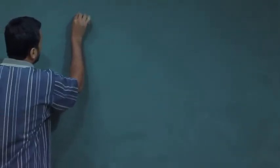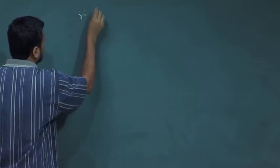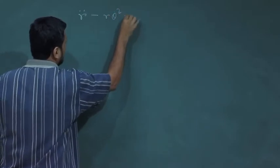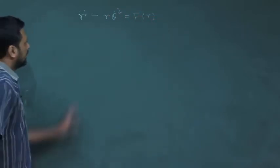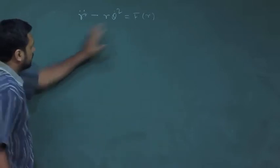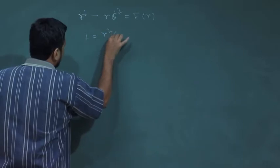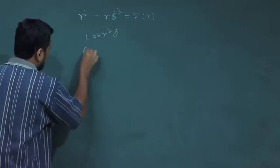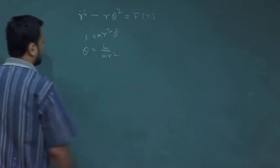The description of the problem is as follows. If you recall, the basic Newtonian differential equation of motion was r̈ − rθ̇² = f(r). We also had L = mr²θ̇, which means θ̇ = L/(mr²).